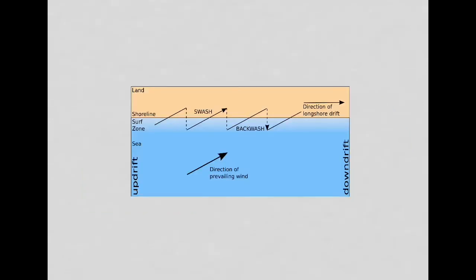In order to understand how a spit forms, we must quickly recap what longshore drift is. Waves rarely hit the coastline at a right angle — they very rarely arrive perfectly perpendicular to the coast. Most likely they arrive at a different angle, and that is controlled by something called the prevailing wind. The prevailing wind is the most common wind direction at a particular coastline.